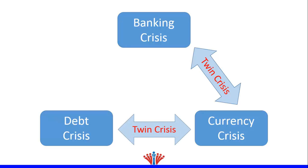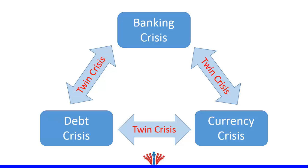Where excessive public debt puts downward pressures on currency value. Banking and debt crises could also happen simultaneously, where bank panic requires the government to bail out the financial sector, which could result in excessive budget deficit and public debt.